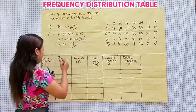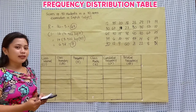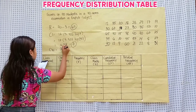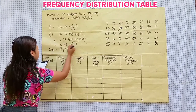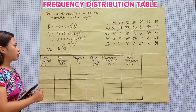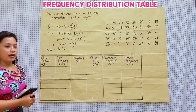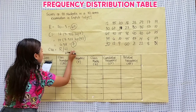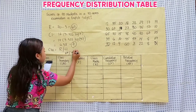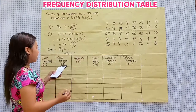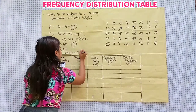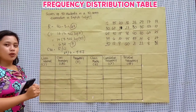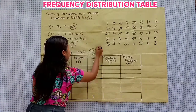Next step is we need to calculate the class width. Our range is 67 and our class interval is 7. We calculate this and the result is 9.57. We need to round this to the next whole number, which is 10. This is our class width.